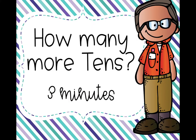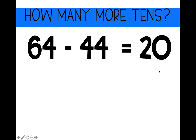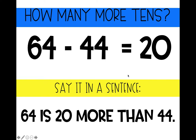Let's move on to find out how many more tens: 64 minus 44. How many more tens is 64 than 44? We want to look at the tens place. We see six tens in 64 and four tens in 44. We can ask ourselves: what is six minus four? It's two tens. Six tens minus four tens equals two tens, so 64 minus 44 equals 20. Let's say it in a sentence together: 64 is 20 more than 44.